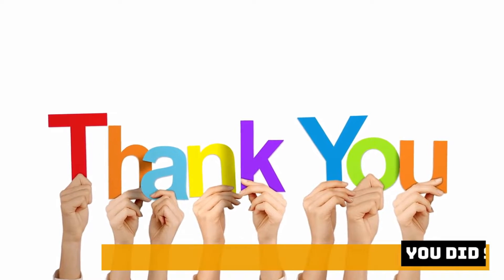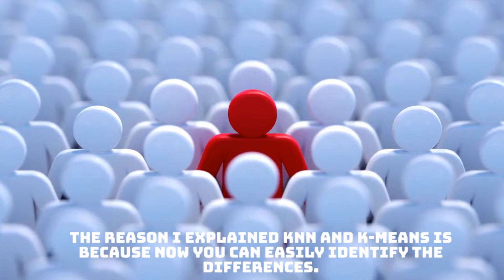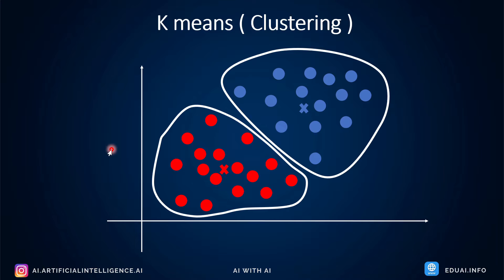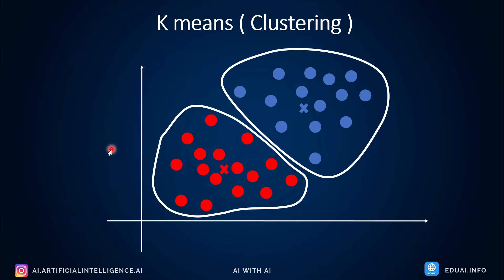Now that you understand how each algorithm works, you can easily identify the differences. KNN is a supervised learning technique because you have labeled data. In K-Means you do not have any labels initially — all data points are unlabeled, making it an unsupervised technique. This is the fundamental difference: supervised versus unsupervised. The objective of KNN is to classify the new data point into one of the identified classes, while K-Means does clustering — it forms clusters on unlabeled data.